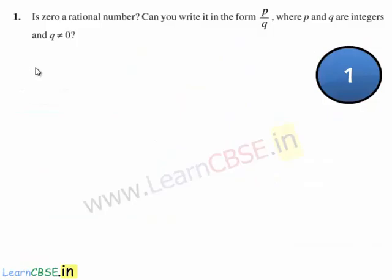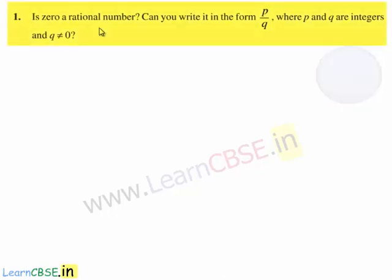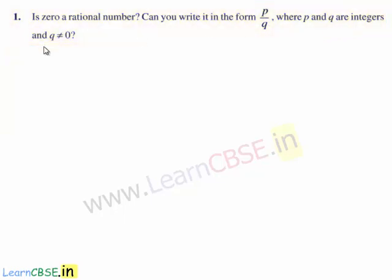Now we shall start with the first exercise. The first question is: is 0 a rational number? Can you write it in the form of p by q, where p and q are integers and q is not equal to 0?